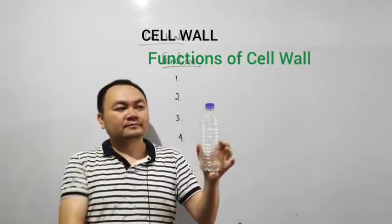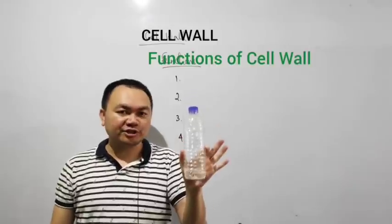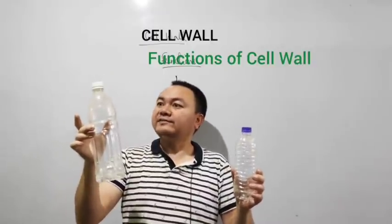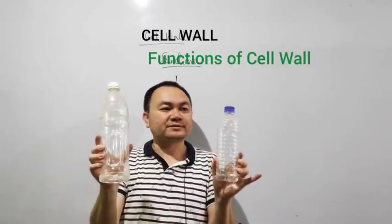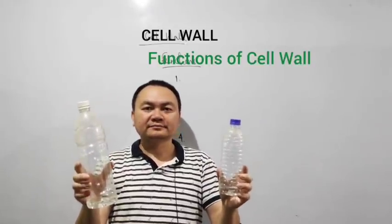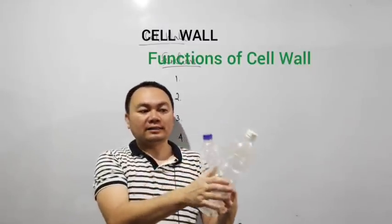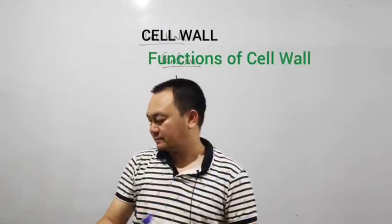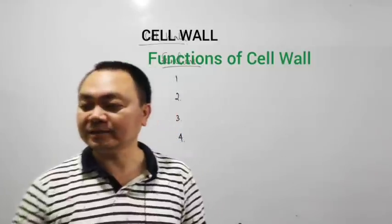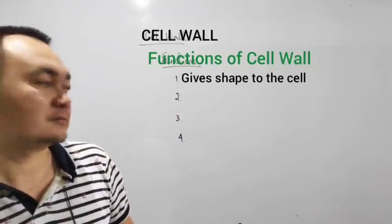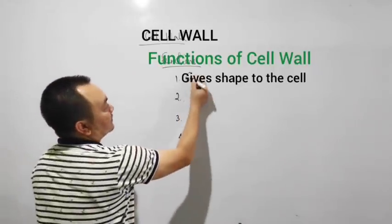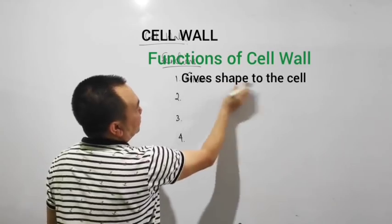So this is a bottle having a definite shape. Similarly, this is another bottle having a definite shape of its own, but the two bottles have different shapes. Why? It is because of the rigid wall that it has. Similarly, a cell wall gives a definite shape to the cell. So the first function is it gives shape to the cell.